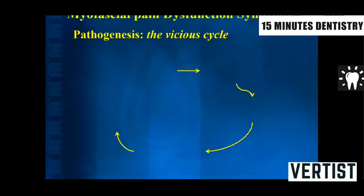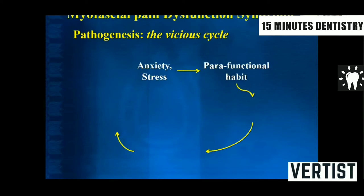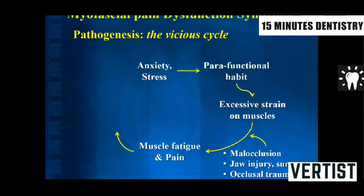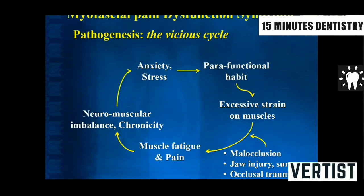MPDS has been strongly correlated with stress. There is a vicious cycle that leads to MPDS: patients who are high-strung or have anxiety and stress generally develop parafunctional habits, causing excessive strain on muscles, which leads to muscle fatigue and pain. This can be exacerbated by malocclusion, occlusal trauma, or jaw injuries. The muscle fatigue and pain then create an imbalance in the neuromuscular complex, causing chronicity of the disease, which leads to more anxiety and stress.